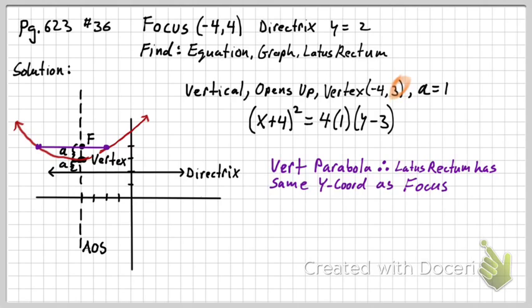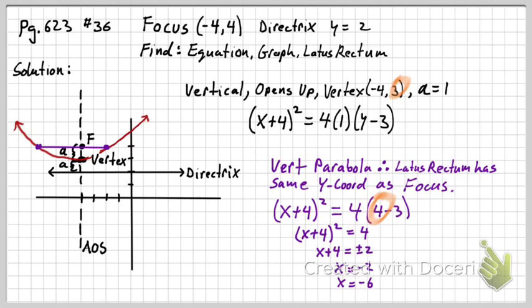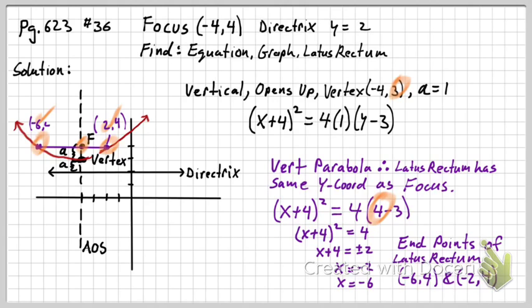And it also asks us for the latus rectum. I can do it algebraically just like I did last time. That's exactly what I'm going to do, except this time I know the y-coordinate. So I'm going to plug in my y-coordinate of my latus rectum, which is four. That's where this guy comes into play, because that has the same y-coordinate as this guy, this guy, and this guy. And so I'm going to solve for this guy and this guy, and that's where we get our endpoints.